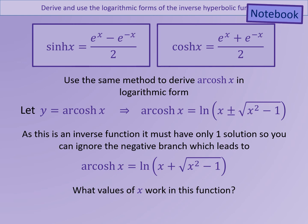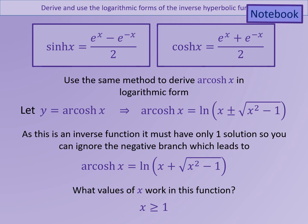We want to consider which x values this would be valid for. Considering the cosh graph, y doesn't exist below 1 for this graph. So therefore, for inverse cosh, the values of x that are valid are x greater than or equal to 1.